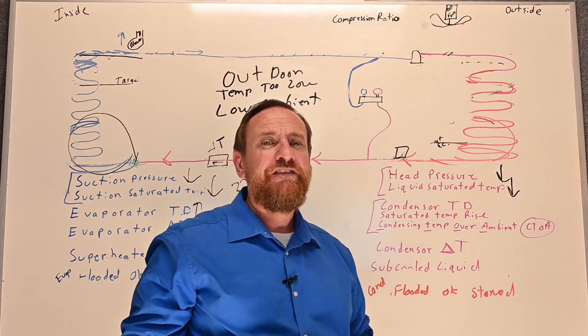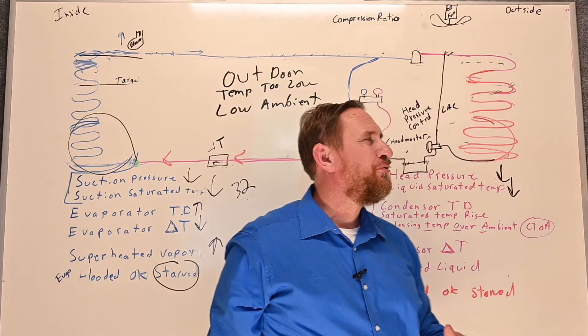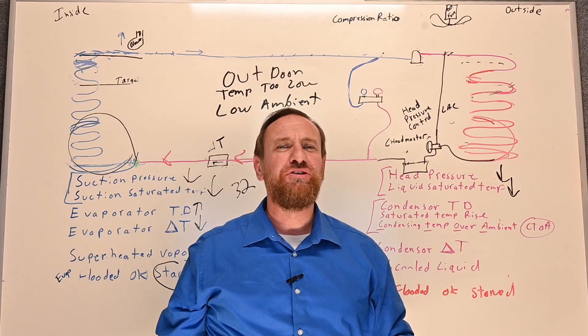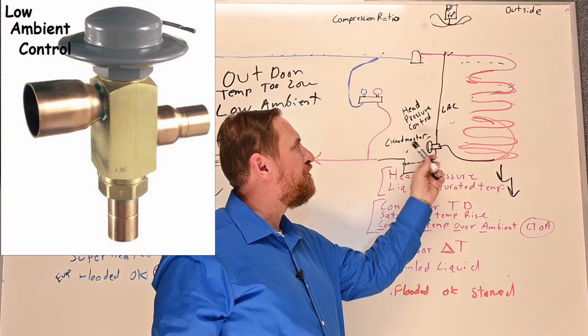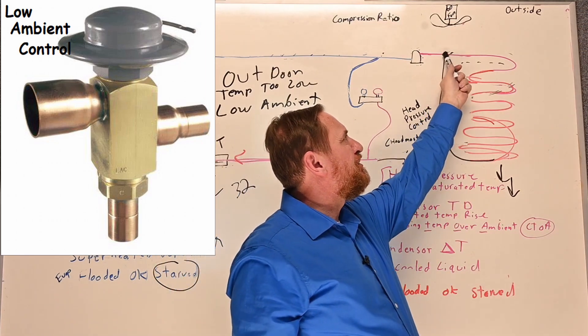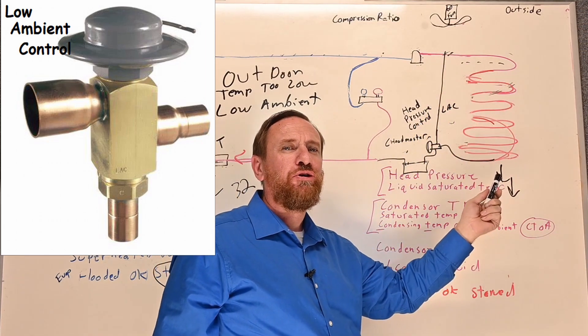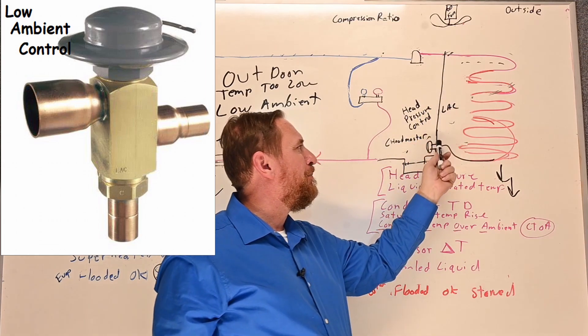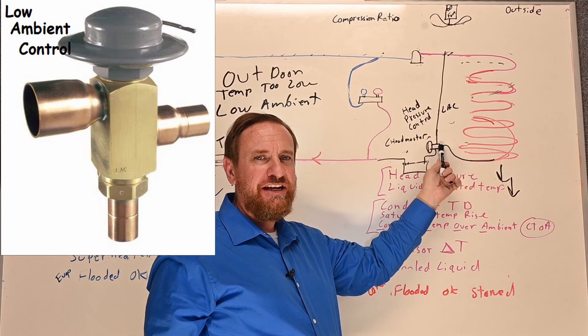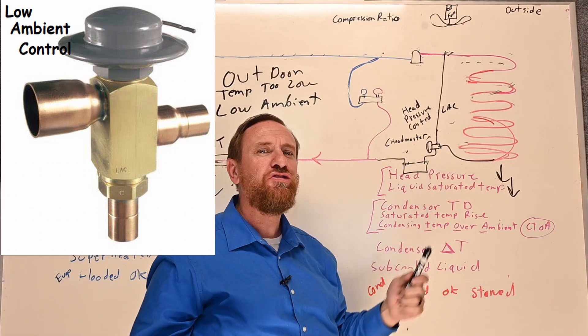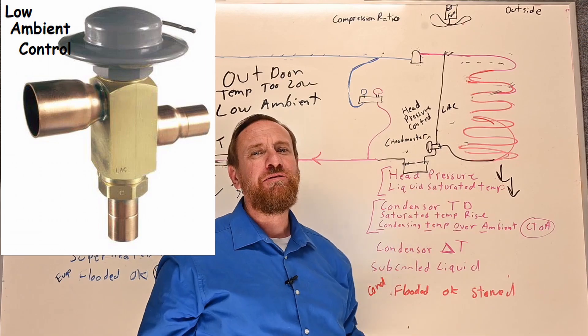And then there's my favorite way. So we can also use what we call a head pressure control. A lot of people call them a headmaster, but it's a head pressure control. The LAC is the most common type. What we're going to have is three pipes on it. We have our discharge line. It goes into our condenser like normal, but our discharge line also has a bypass option that comes down to. Then as the refrigerant comes out of our condenser, it also goes into this. And the third one comes out and either goes to our liquid line or to our liquid receiver. Most usually it's a liquid receiver.